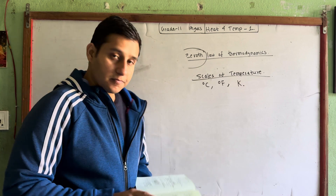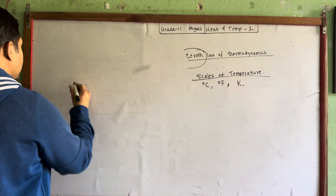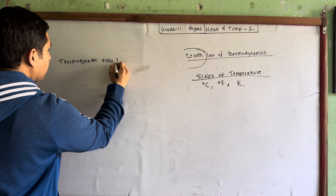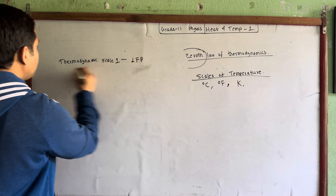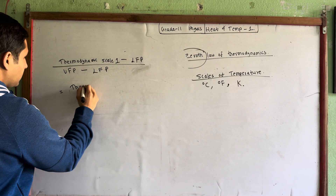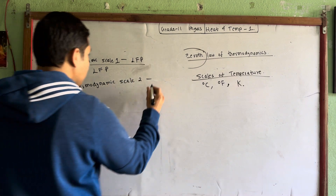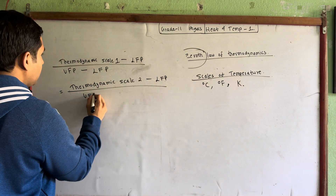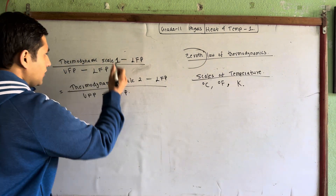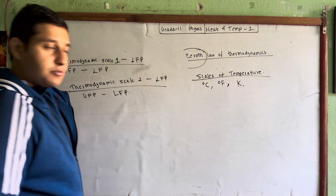The general formula for converting between thermodynamic scales is: (Scale 1 minus lower fixed point) divided by (upper fixed point minus lower fixed point) equals (Scale 2 minus lower fixed point) divided by (upper fixed point minus lower fixed point).